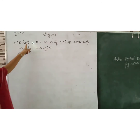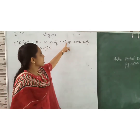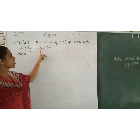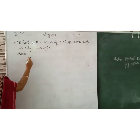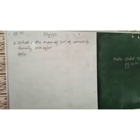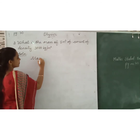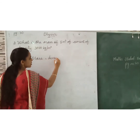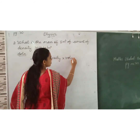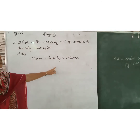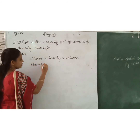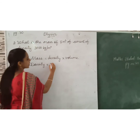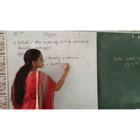Next question: What is the mass of 5 meter cube of cement with a density of 3050 kilogram per meter cube? We have to find the mass. The formula for density is density = mass ÷ volume, so mass = density × volume. Density is equal to 3050 kg/m³.